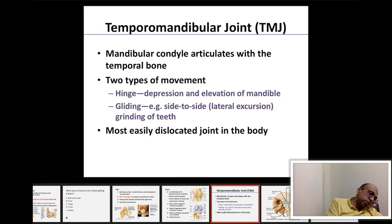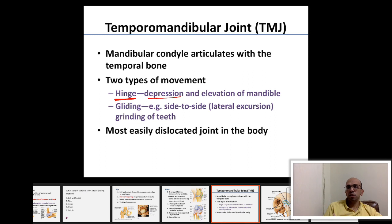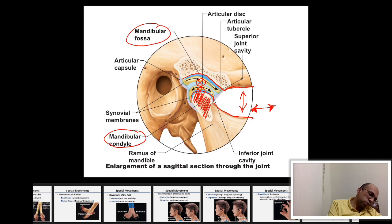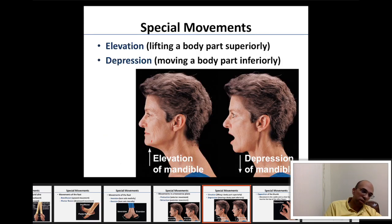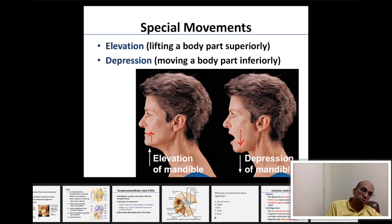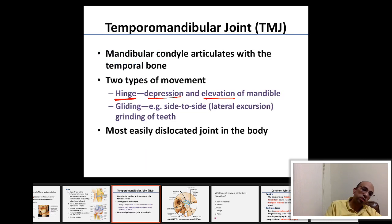The TMJ contains two types of joints. First, a hinge joint allows depression and elevation of the mandible — opening and closing the mouth. When you close your mouth, that is elevation of the mandible; when you open your mouth, that is depression of the mandible.